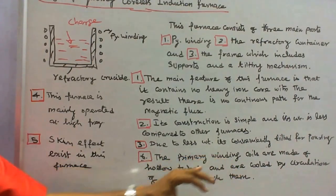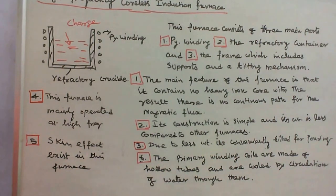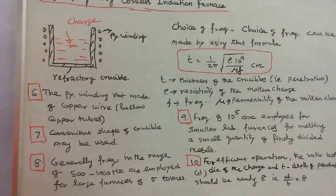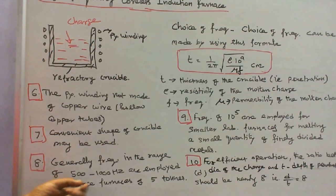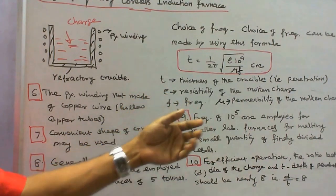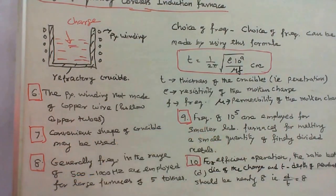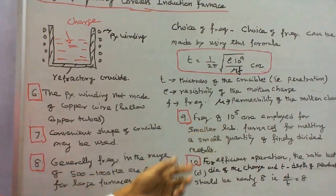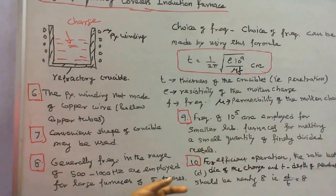The primary winding coils are made up of hollow tubes and are cooled by circulation of water through them. Hollow copper tubes are used instead of copper wire. Any convenient shape of crucible may be used. Generally, frequencies in the range of 500 to 1000 Hz are employed. For larger furnaces of 5 tons, lower frequencies are used, while higher frequencies of around 10 kHz are employed for smaller laboratory furnaces for melting small quantities of finely divided metals. For efficient operation, the ratio D/T, where D is the diameter of the charge and T is the depth of penetration, should be nearly 8.